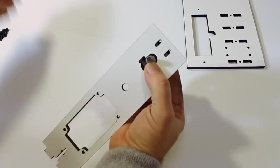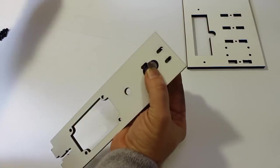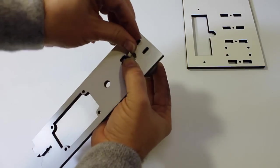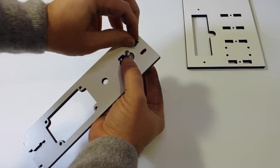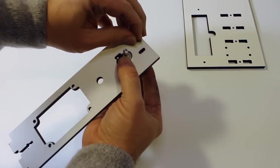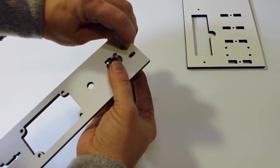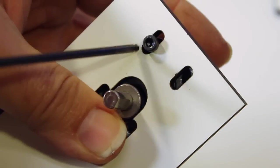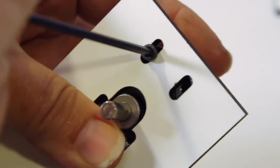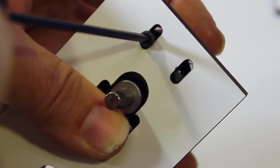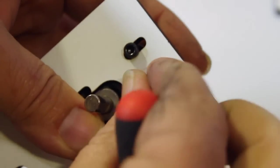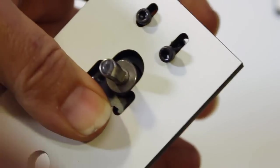Take two 10mm M3 screws and just get them started into that mounting hole in the motor. Just tighten that down a bit and rotate the motor if you need to until you see the other hole line up inside the other slot and put in the other 10mm screw.